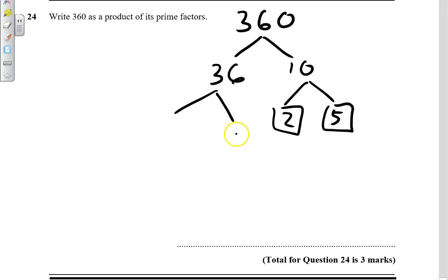36 I can go let's go 3 and 12. 3 being a prime number. 12 it doesn't matter it could be 2 or 6 or 3 or 4. Let's go 2 and 6. Again prime number.